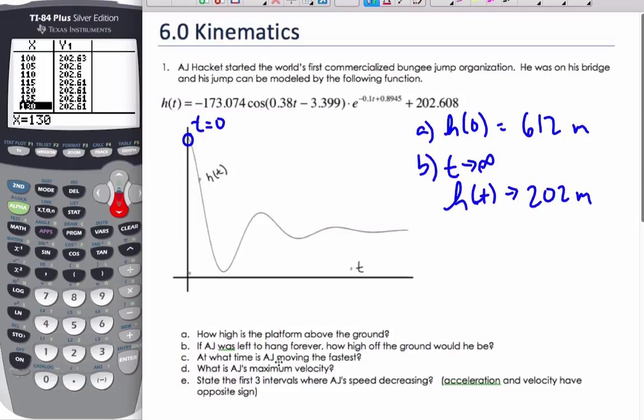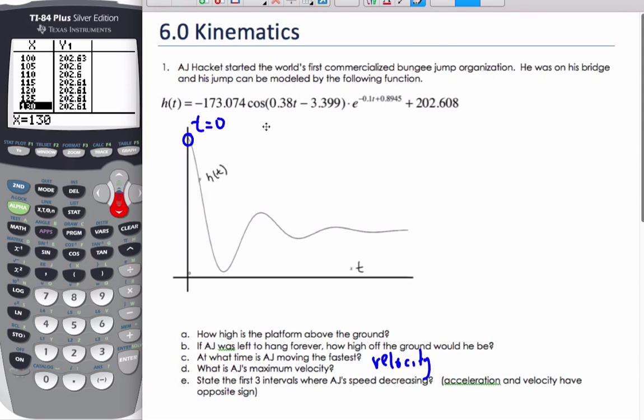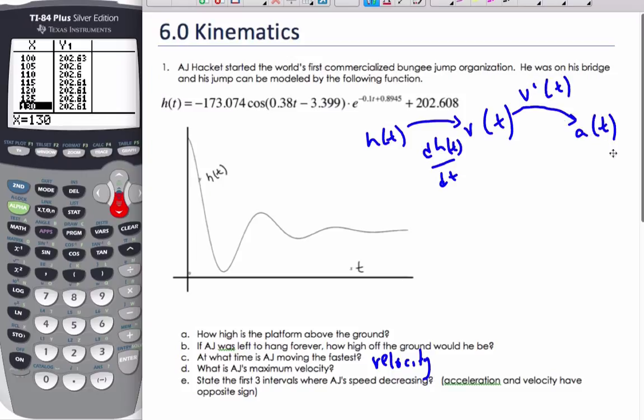Now part C says at what time is A.J. moving the fastest? Well, the fastest implies velocity. And one thing I know about velocity, distance, and time is if I have my position or my height, and if I take the derivative of height, I get the velocity. And this is if I do dh/dt, I get velocity. If I take the derivative of velocity, so v prime at t, I get the acceleration. Similarly, if I go backwards I integrate. So if I'm looking for the fastest, I'm looking at the velocity curve.